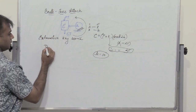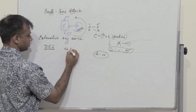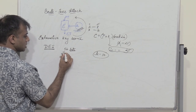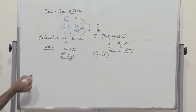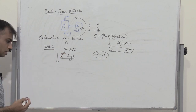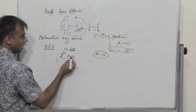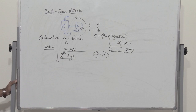Now in today's scenario, if we consider an algorithm like DES which uses a key length of 56 bits, how many different keys would we have? We would have 2 to the power of 56 different keys. So the attacker would have to do a key search equal to 2^56. Therefore, the amount of time required for the attacker to identify the correct key is proportional to the length of the key. The larger the key length, the more time the attacker would take to identify the key, because he has to try all possible variants.